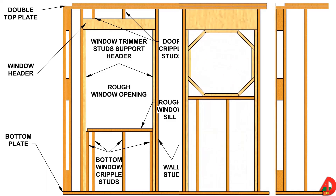Additional cripple studs might be placed under each end of the sill for additional support. Some oval, round, or irregularly shaped windows have bracing and other framing members in place when they are delivered.